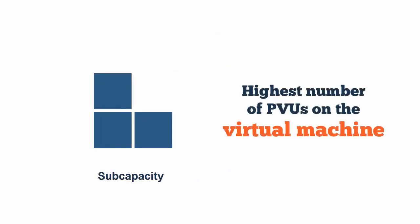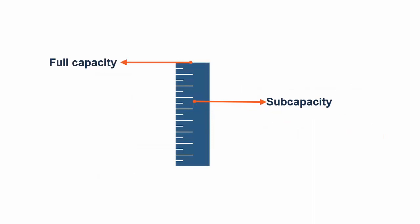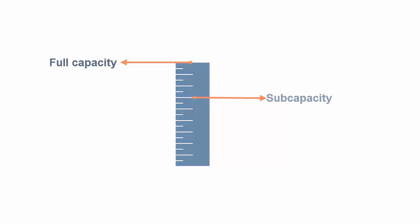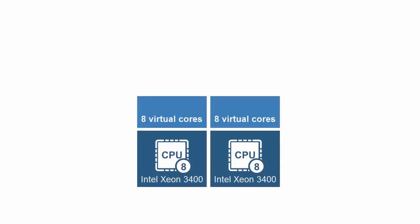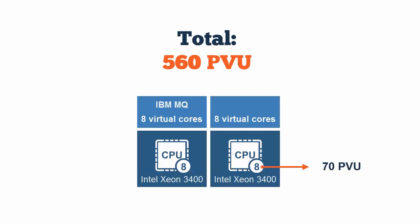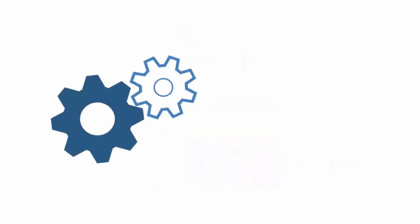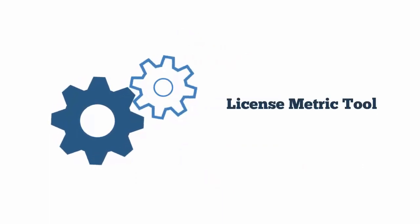PVU sub-capacity is counted as the highest number of PVUs that are available to the VM on which the product is installed, not the PVU count on the physical server. PVU sub-capacity is usually lower, or at worst equal to full capacity. Thus, it can significantly reduce the licensing cost. However, it is applicable only when you use eligible virtualization technologies. For example, we have a server with 16 cores. Two virtual machines are deployed on the server, each with access to eight cores. IBM MQ is installed only on the first virtual machine, so it has access to eight cores. In accordance with the PVU table, each processor core is assigned 70 PVUs per core, giving us 560 PVUs required to license IBM MQ. To benefit from PVU sub-capacity, IBM License Metric Tool is required to measure PVU consumption.